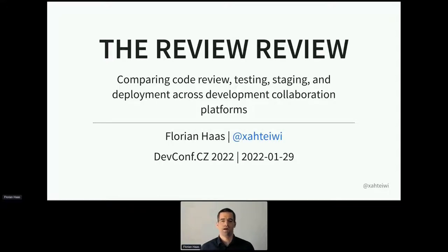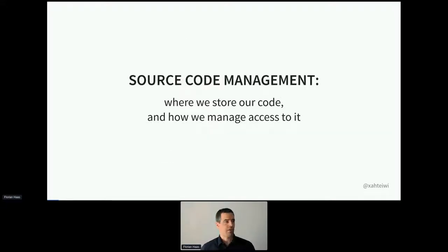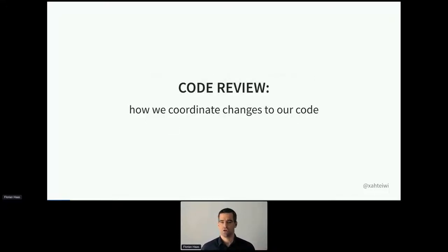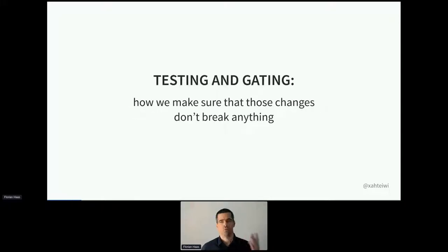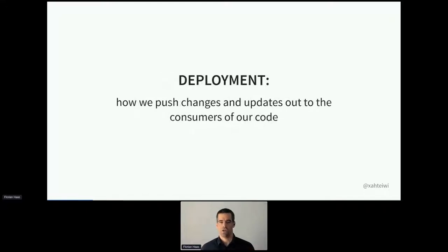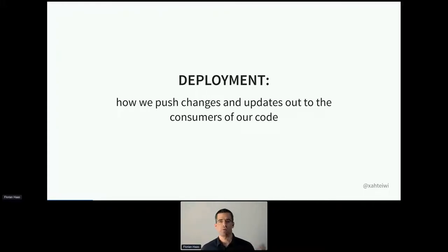That means I'm talking about source code management — where we store our code and how we manage access to it. Code review — how we coordinate changes to our code. Testing and gating — how we make sure those changes don't break anything. And finally, deployment — how we push changes out to consumers of our code, whether customers, users, or other machines such as downstream API services.